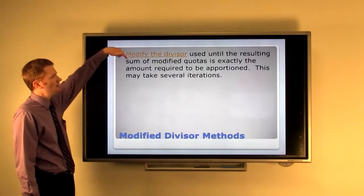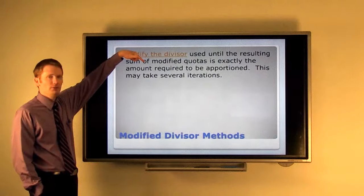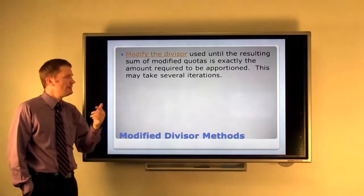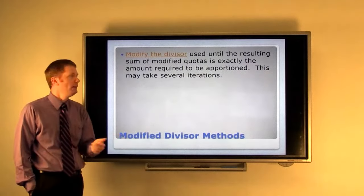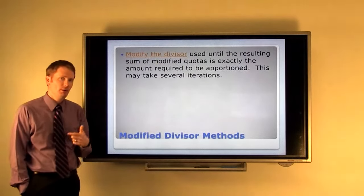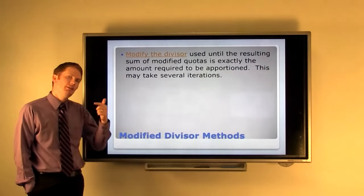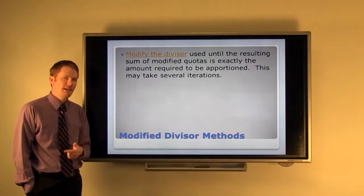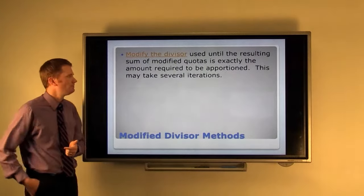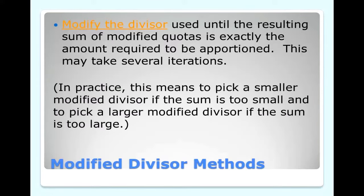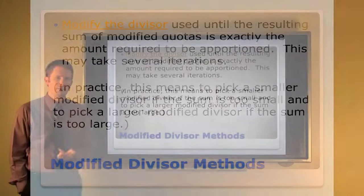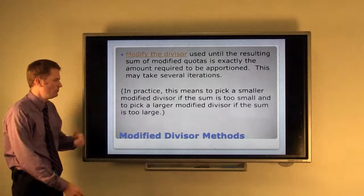We're going to go back to that data and see how this would work. We're going to use the resulting sum of our modified quotas. That's what we're going to call after we divide instead of dividing by the standard divisor we're going to modify it either up or down and divide each of the populations by this new number so that the modified quotas add up exactly to the number that we desire. So this means we're going to be doing some guess work. It may take a while. In practice you can pick a smaller modified divisor if the sum is too small and you can pick a larger modified divisor if the sum is too large when you choose your next one.